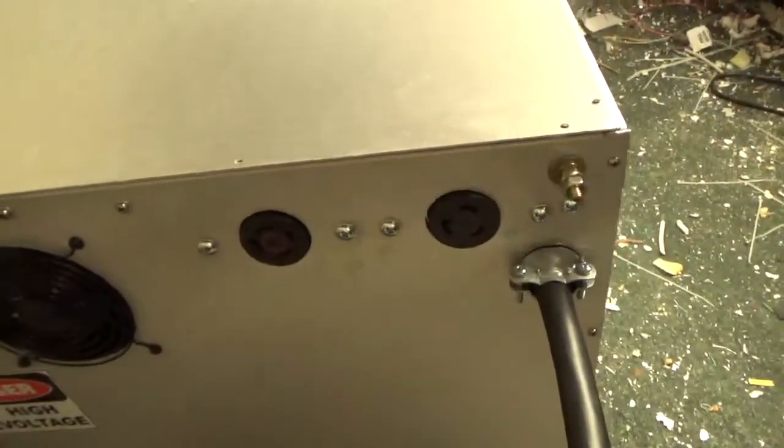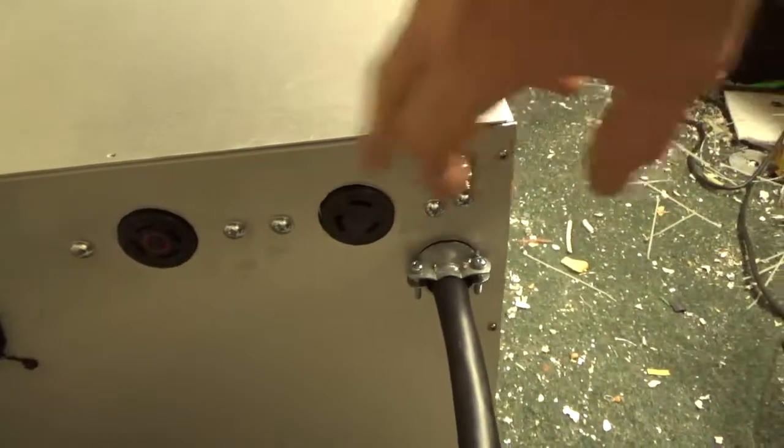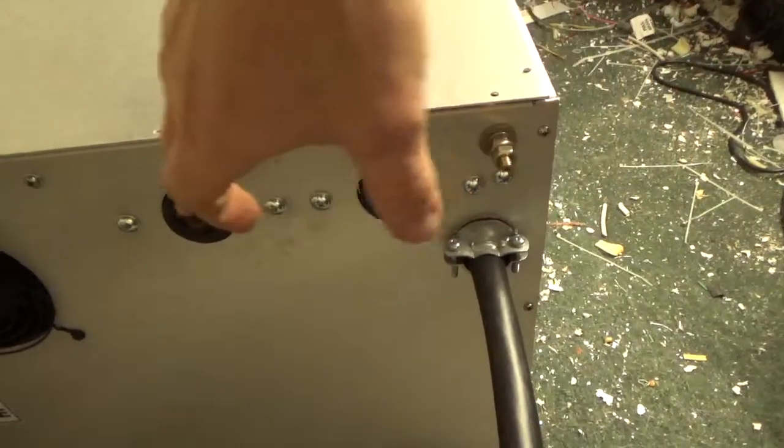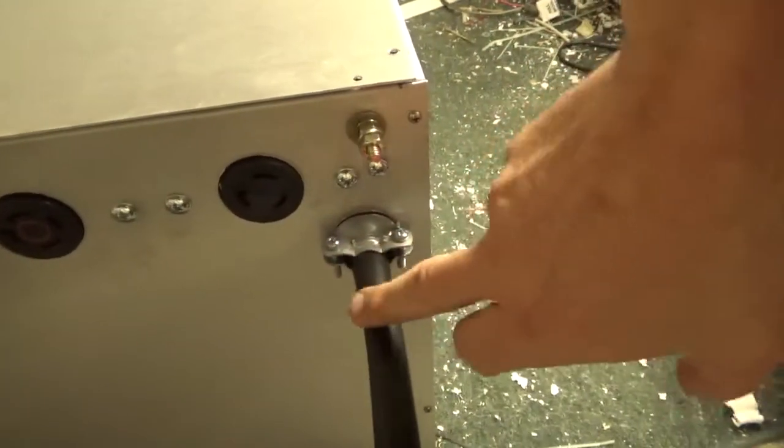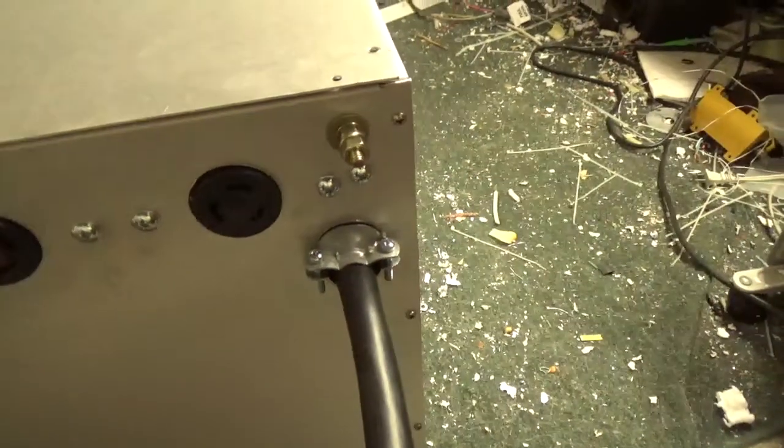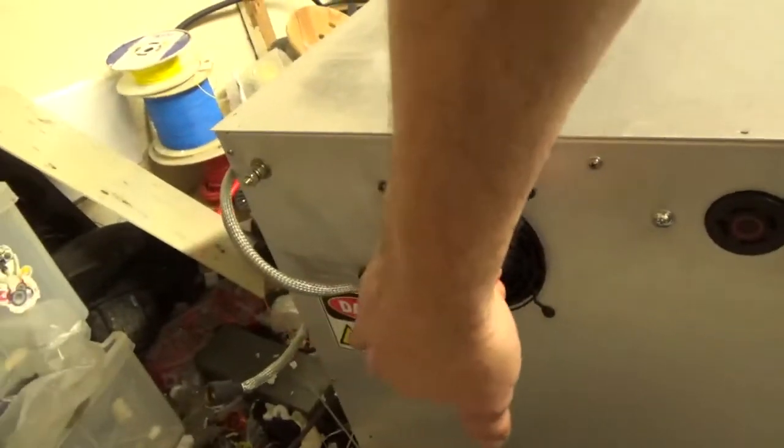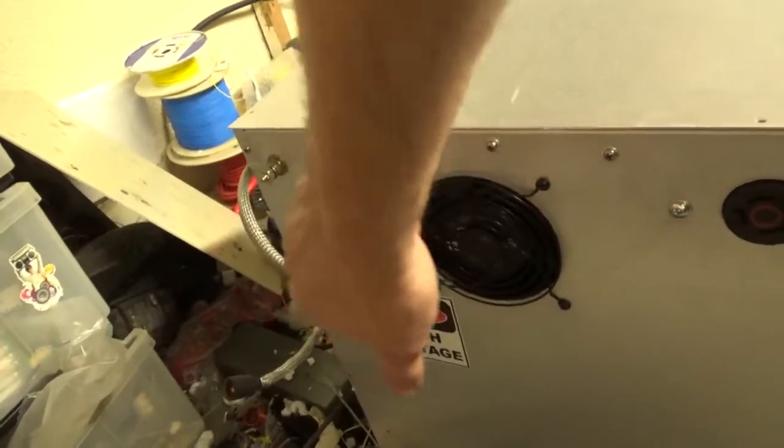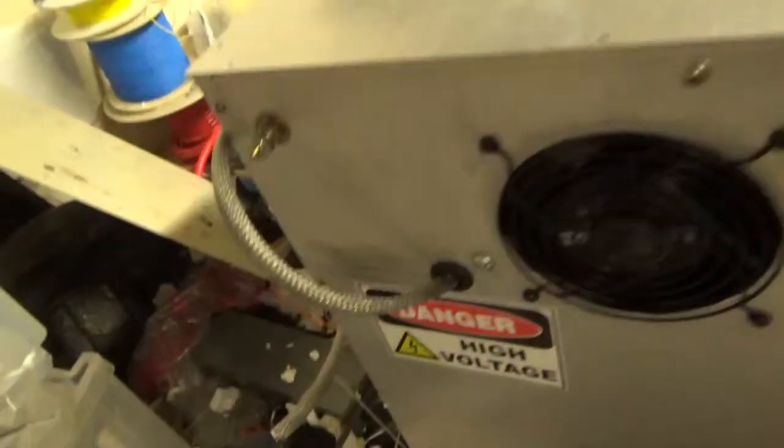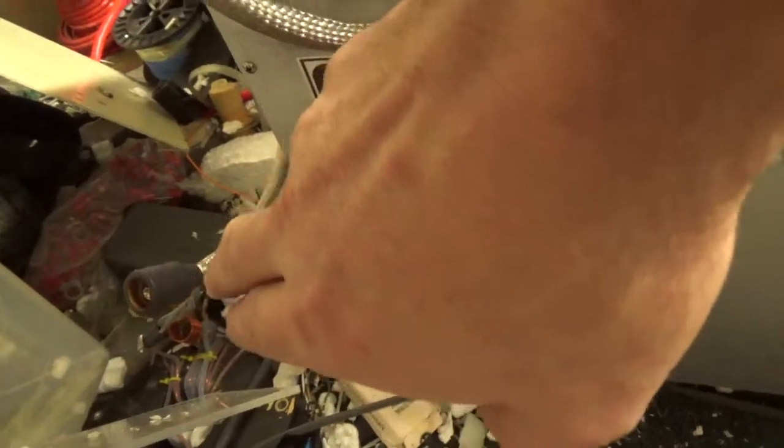I'll show the back. You've got the individual twist-lock plugs, ground stud. Like I said, there's a ground in each one. You have a ground in the number 6 SOOW cable. High voltage sticker, ground stud. You've got the B-positive going through a grounded shield with a Millen connector rated for 7 kV. Has the heat shrink on it.